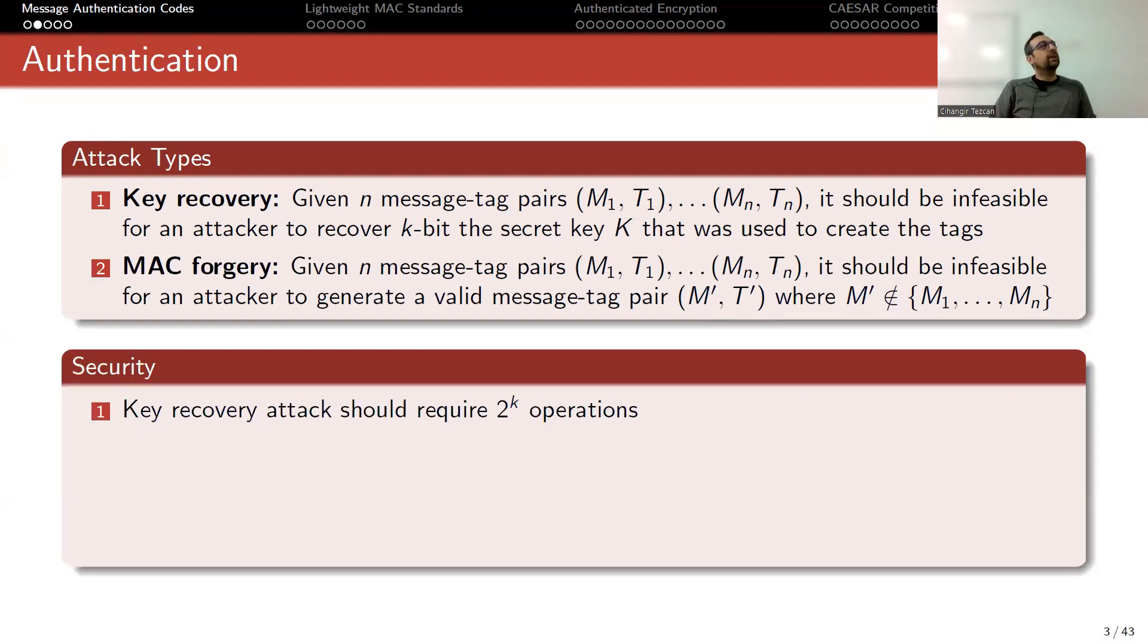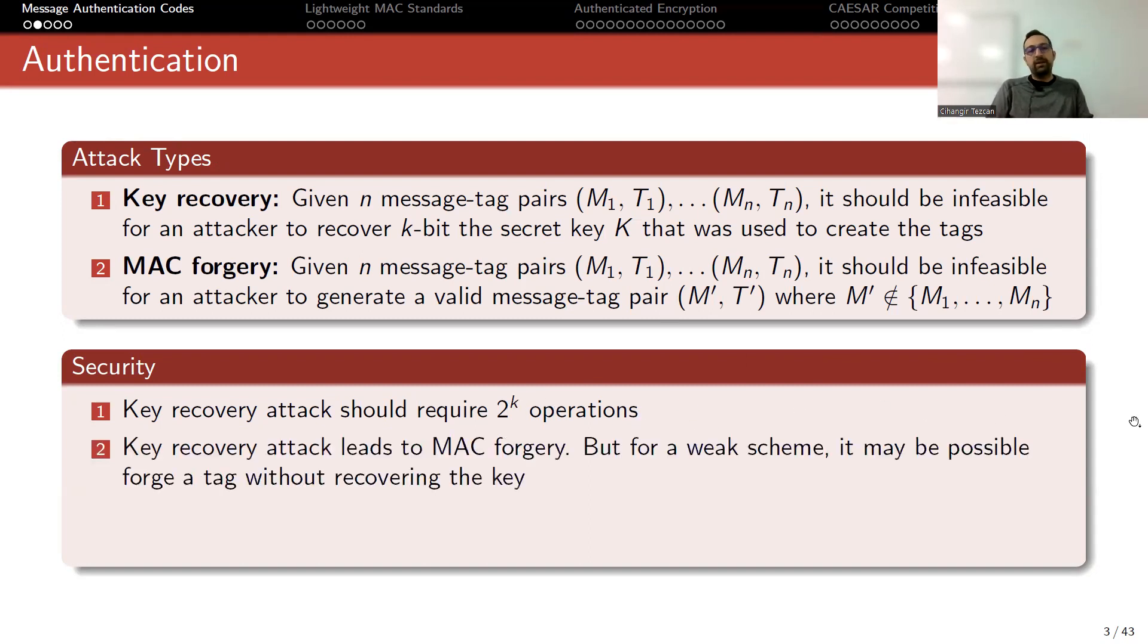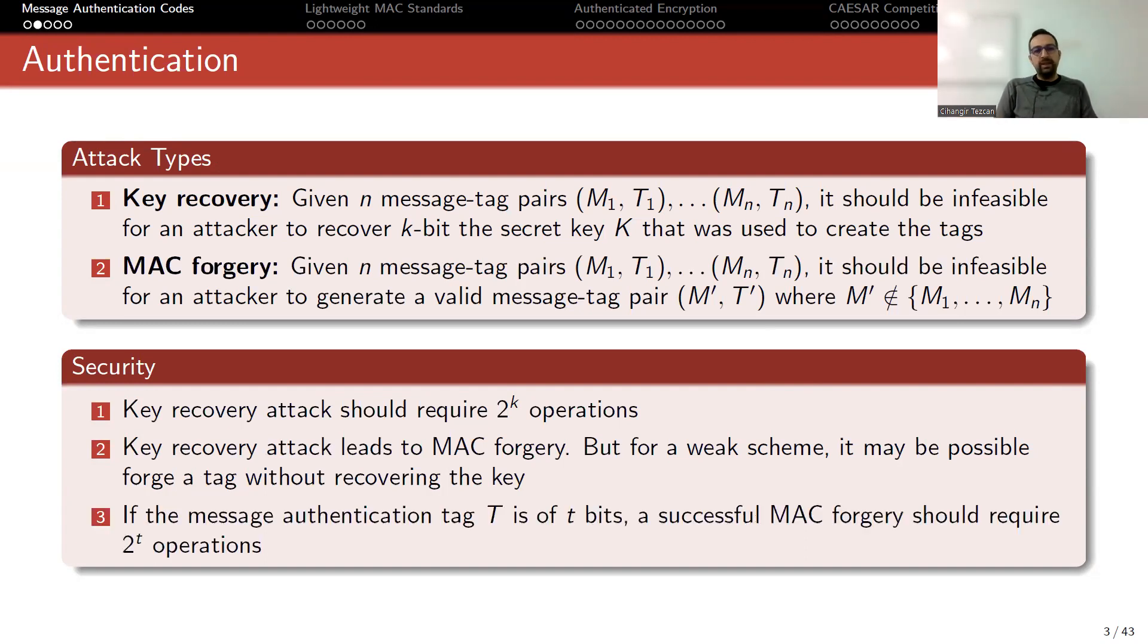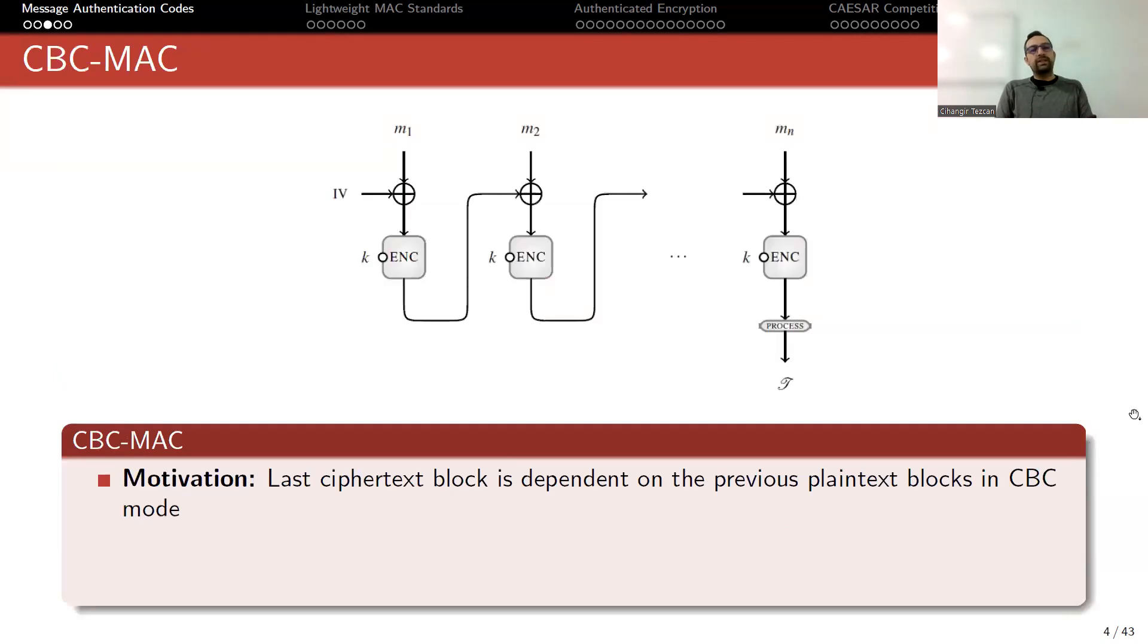Key recovery attack should require 2 to the K operations, because the secret key is K bit. Key recovery attack leads to MAC forgery because if you capture the key, then you can generate any messages and tags. But for a weak scheme, it may be possible to forge a tag without recovering the secret key. If the message authentication tag T is of T bits, a successful MAC forgery should require 2 to the T operations.